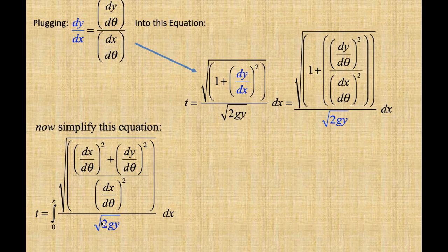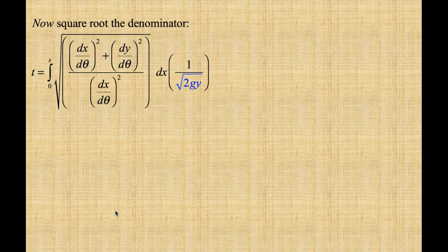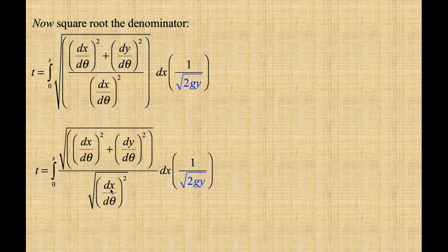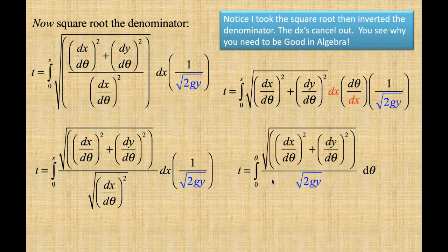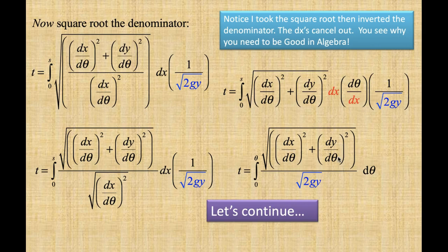We plug dy over dx into the time equation and simplify. Taking the square root of the denominator — the square root of a square is just the term inside — we invert the denominator. The dx's cancel out, and we get time as the integral from 0 to theta of the square root of dx over d-theta squared plus dy over d-theta squared, divided by the square root of 2gy, times d-theta.